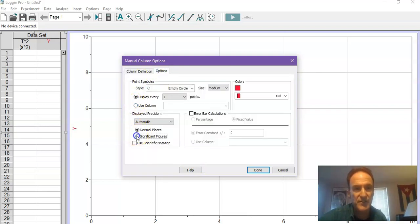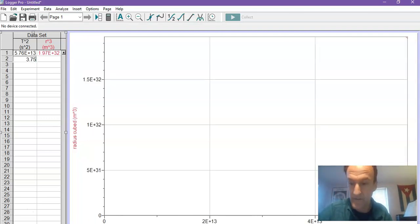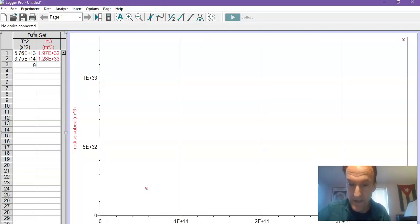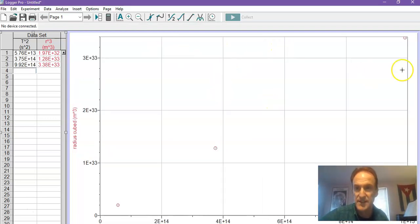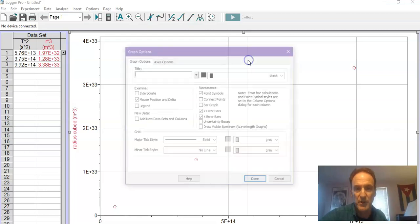And now I'm just going to put in my data. So 5.76E to the 13th, 1.97E to the 32, 3.75E to the 14th, 1.28E to the 33, 9.92E to the 14th, 3.38E to the 33. So there's all that. Kind of nice. Now I'd like to give my little bit of extra space. I can bring this down over here. I can click on this value and make it maybe a little bigger, 1.2E to the 15th.